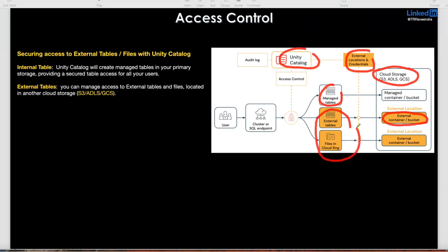We will see that in the next session — how to create a Unity Catalog, how to configure Unity Catalog in Databricks, and how to use it. How to create a table: first we will see the internal table, where it will be stored in default storage, and even you can create a table in external storage.